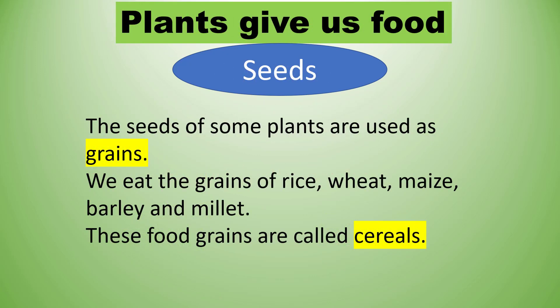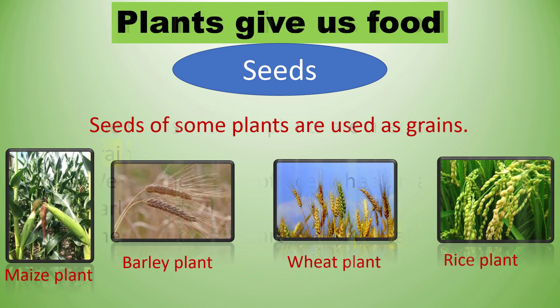Next we will discuss about seeds. The seeds of some plants are used as grains. We eat the grains of rice, wheat, maize, barley, and millet. These food grains are called cereals. You can see some seeds of maize plants, barley plants, wheat plants, and rice plants.